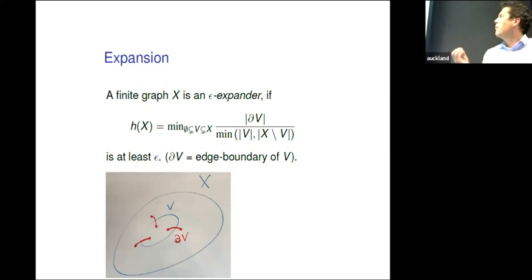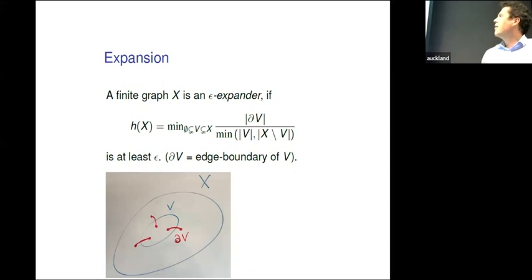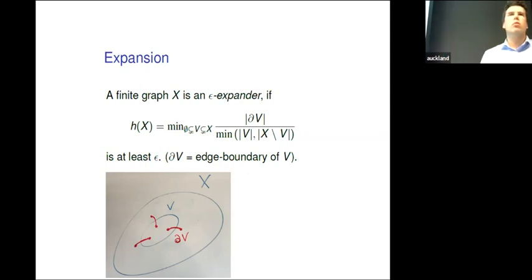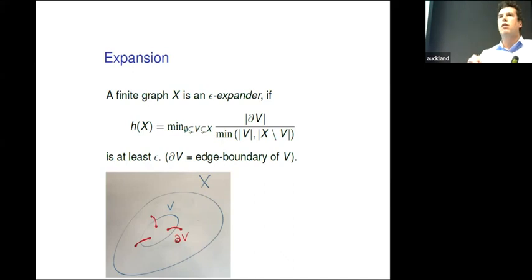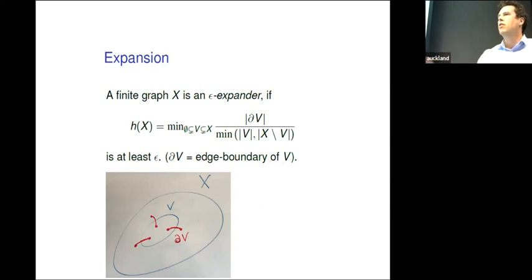Of course, this is a little bit meaningless for one particular graph, because if a graph is connected, if you make epsilon sufficiently small, you can always achieve this. The goal of the talk will not be to talk about one particular graph. We will want to fix epsilon once and for all, and then obtain infinitely many graphs for which this parameter is at least epsilon for fixed epsilon. It's not about one graph — it's about a family of graphs.